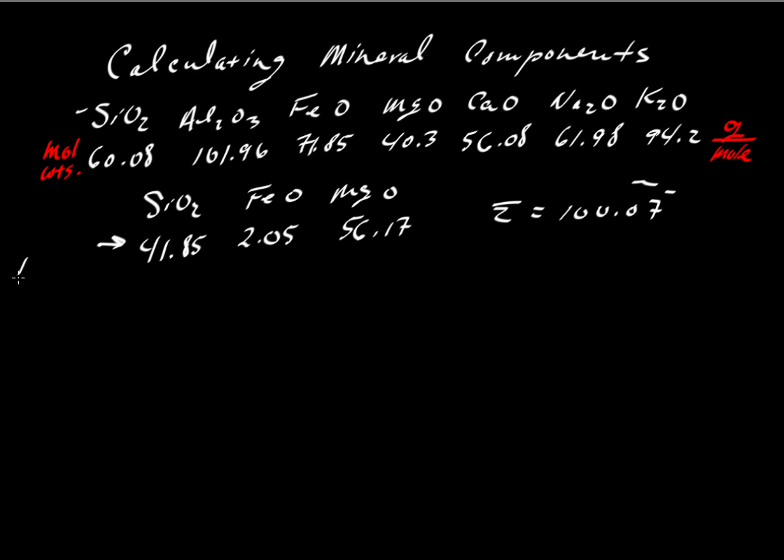So here are the observed weight percents. What are we going to do with these? Well, step one is to divide these by the molecular weight. And the molecular weights I've listed up here. So we'll take silica and divide it by 60.08. This is the molecular weight in grams per mole.